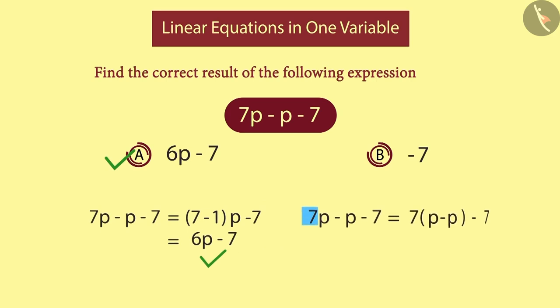At times, 7 is considered to be common, resulting in subtracting P from P, which leads us to option B. But that is the wrong option.